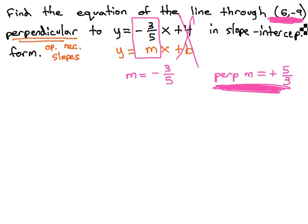We also know we want our line to go through the point (6, -9). We'll use the point-slope formula in order to get us started: y - y₁ = m(x - x₁).